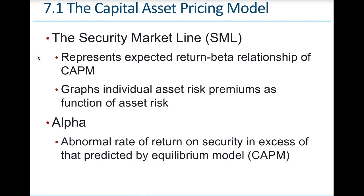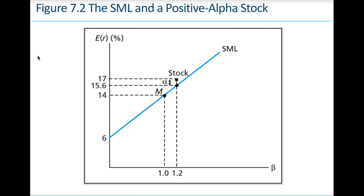We can look at the Security Market Line as a graphical representation of the relationship between return and beta in the CAPM. It's a nice way to graphically plot risk premiums as a function of asset risk. Alpha is the abnormal rate of return on securities in excess of what's predicted by the equilibrium of the CAPM. The expected return-beta relationship is shown graphically — this is the reward-risk equation.